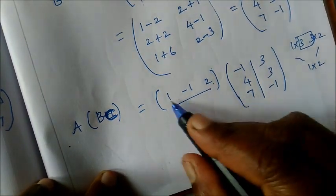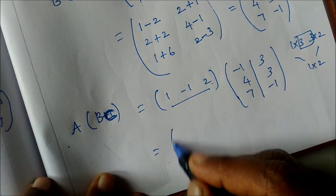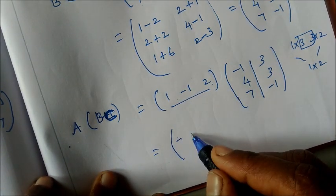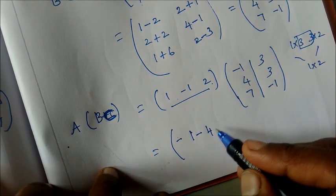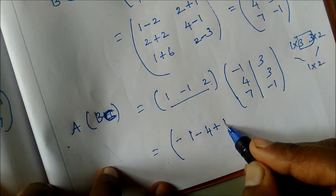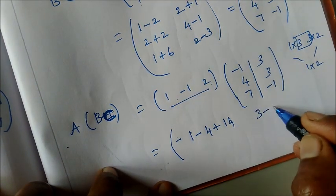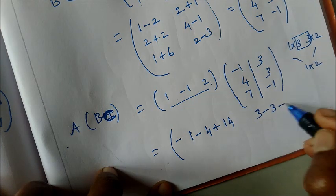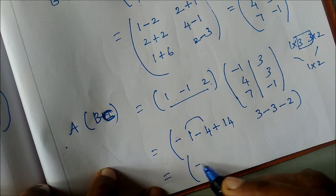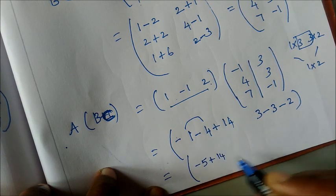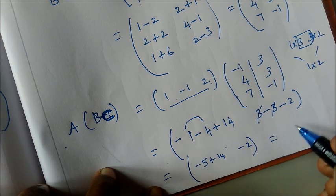Multiply row by columns. First row first column: 1×(−1)=−1, plus (−1)×4=−4, plus 2×7=14. Sum: −1−4+14=9. First row second column: 1×3=3, plus (−1)×3=−3, plus 2×(−1)=−2. Sum: 3−3−2=−2. So A(BC) = [9, −2].